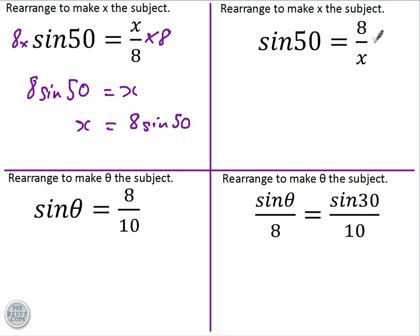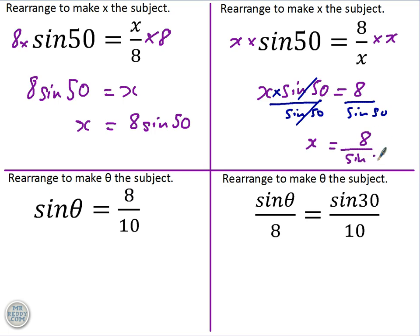Okay, same principle here. 8 at the moment is being divided by x. So if I times both sides by x, then I move x over to here. So I would have x sin50, x times sin50 equals 8. And now to get rid of what has now become multiplied by sin50, if I divide both sides by sin50, those cancel out. And what you're left with is x equals 8 over sin50.